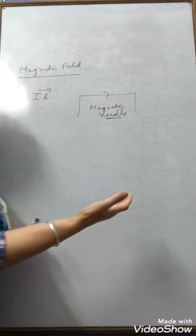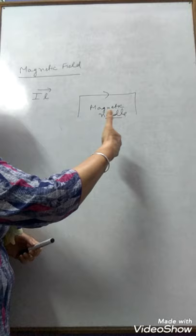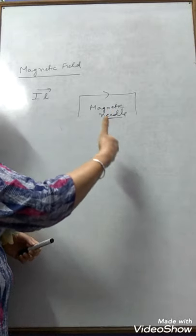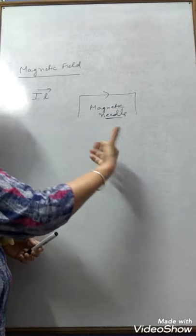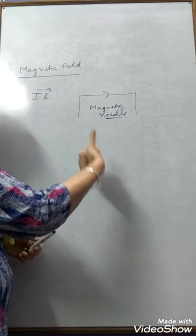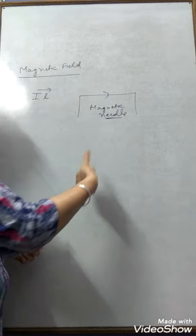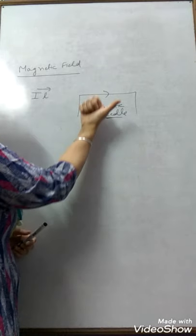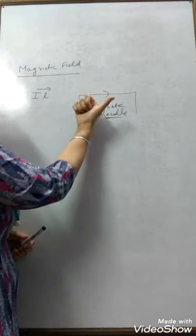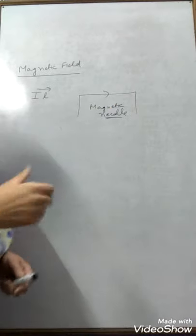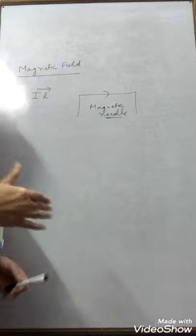According to Oersted, we calculate the direction of this magnetic field using the right-hand thumb rule. If a current-carrying wire is grasped in the right hand and the thumb points in the direction of current, then the curling of the fingers will point out the direction of the magnetic field around the wire. With a change in the direction of current, the direction of the magnetic field also changes.